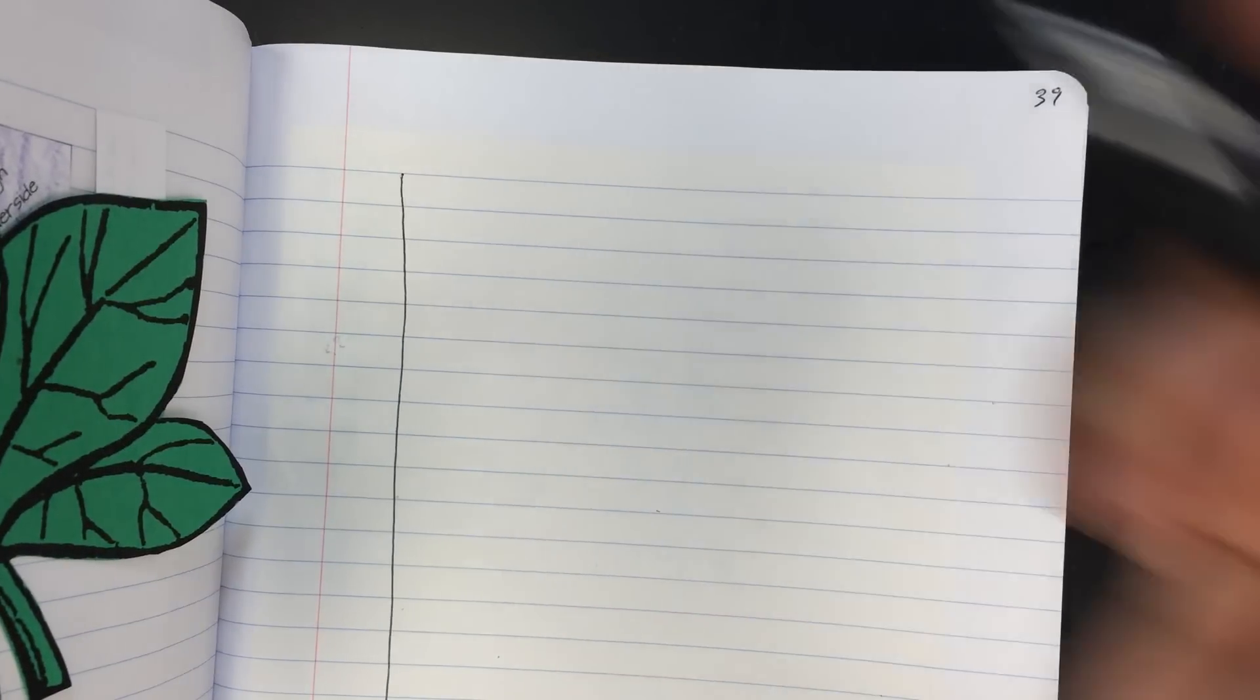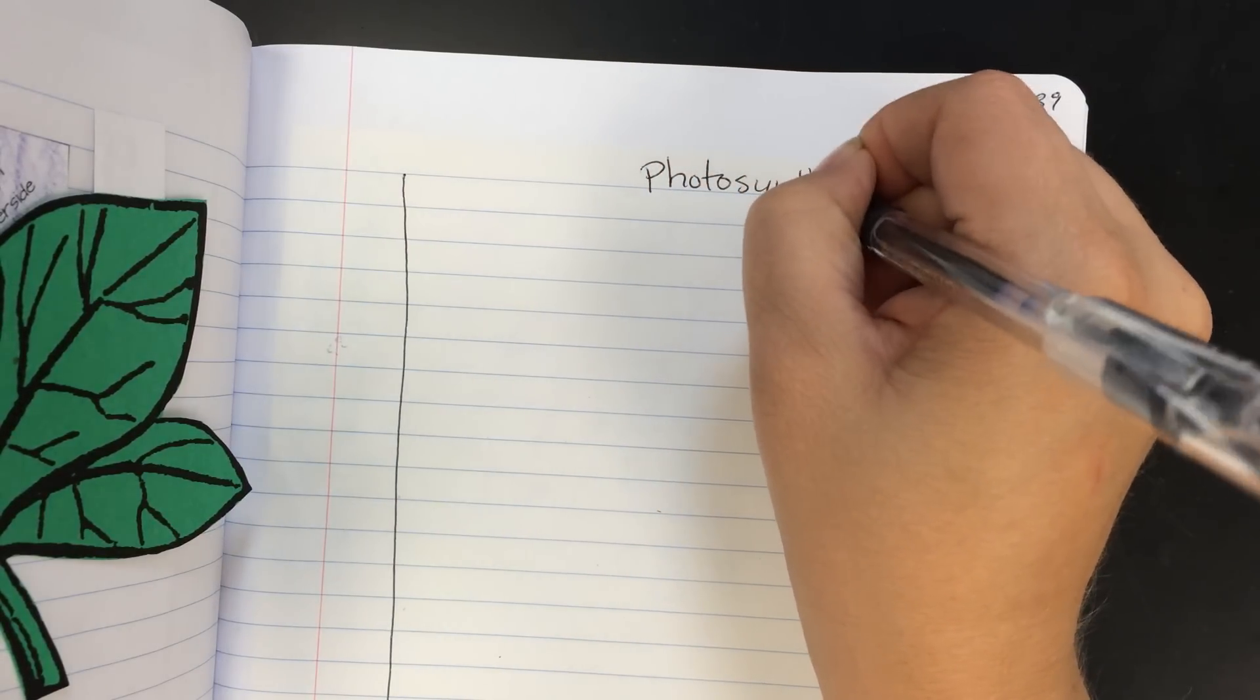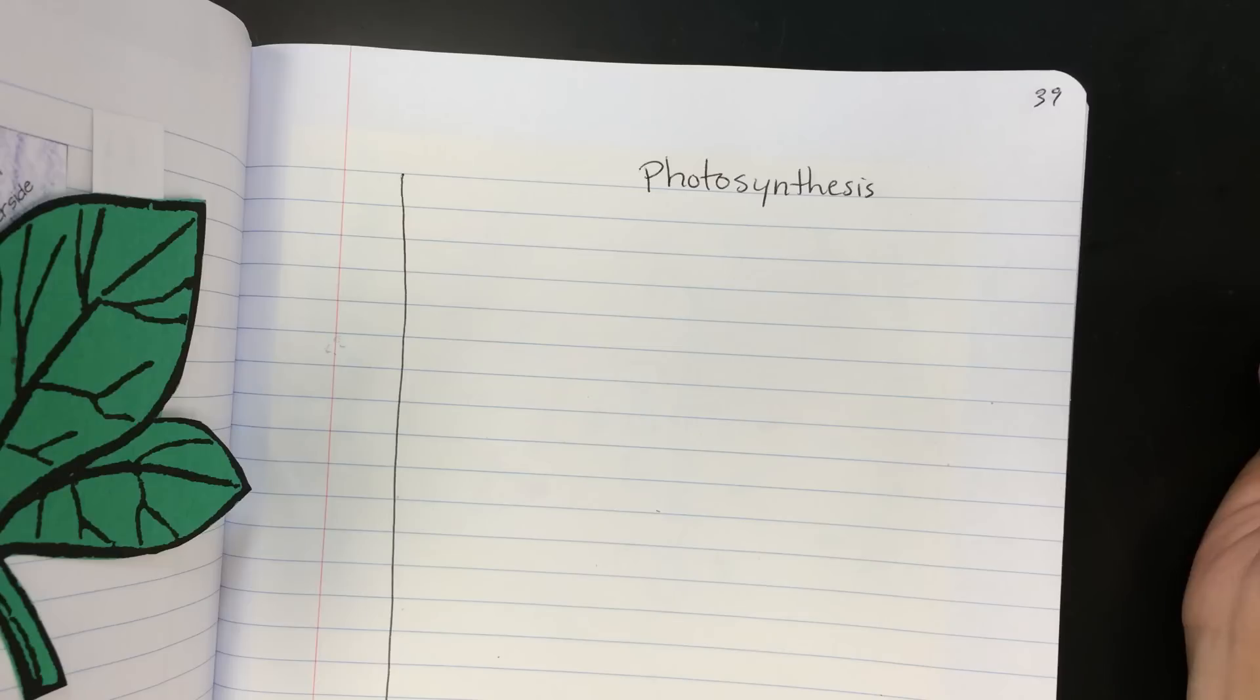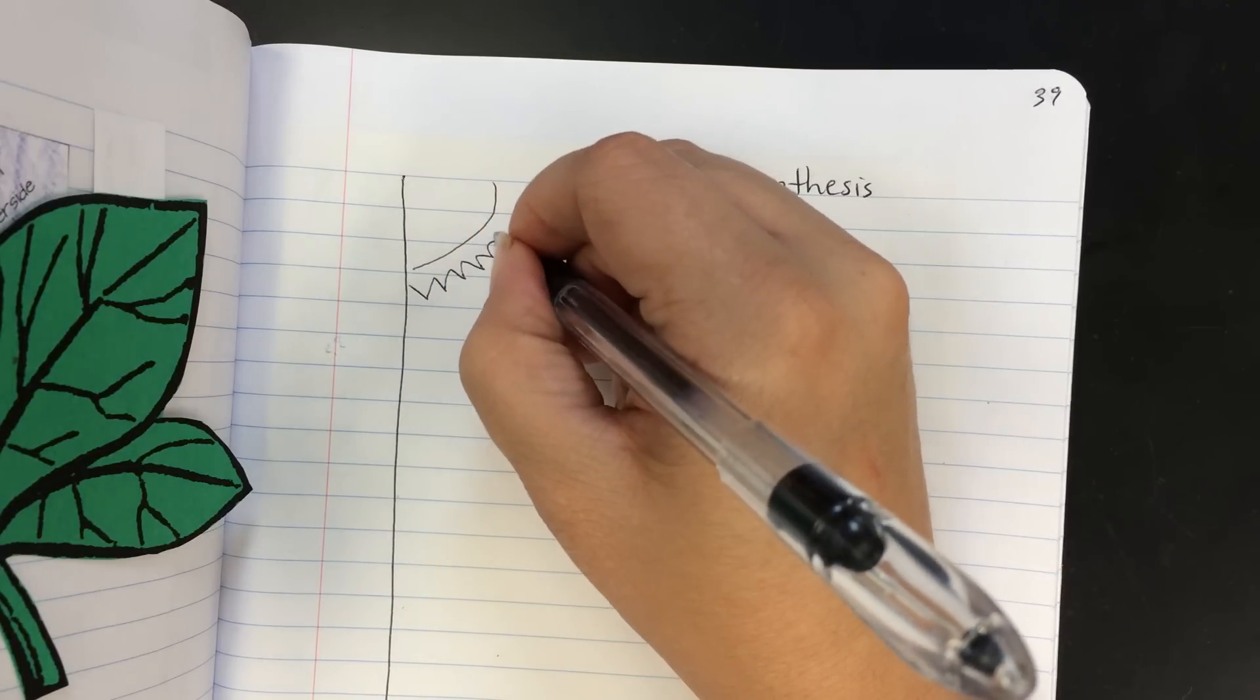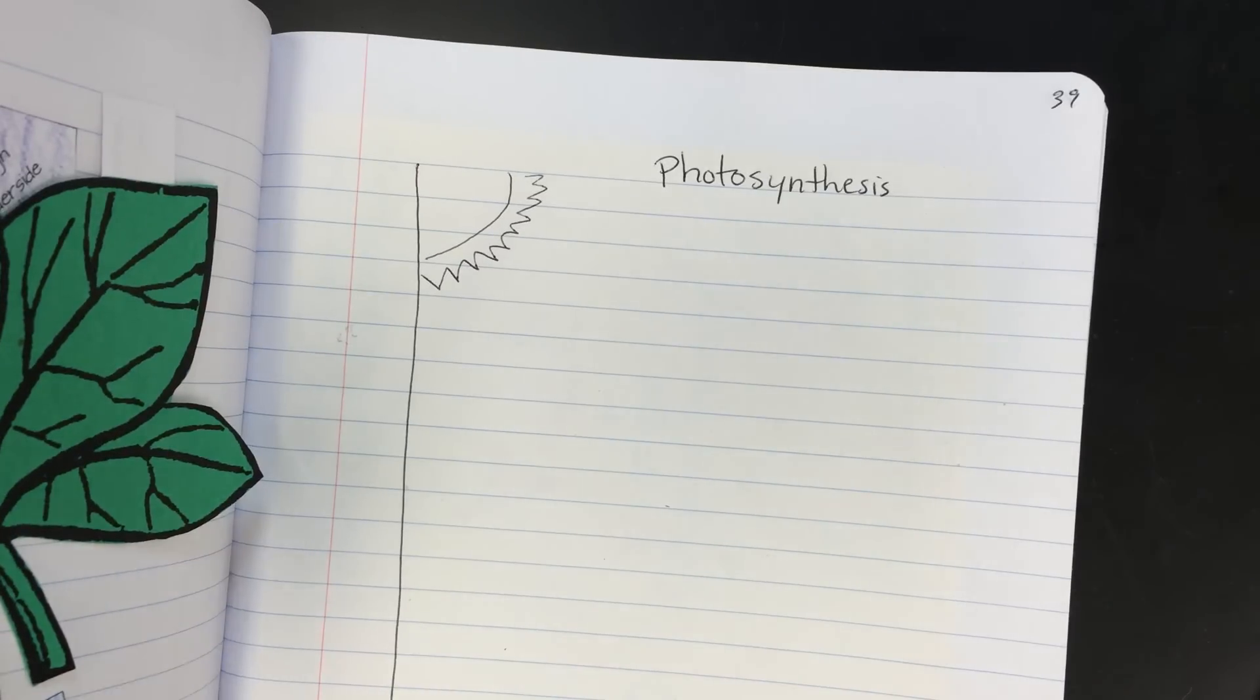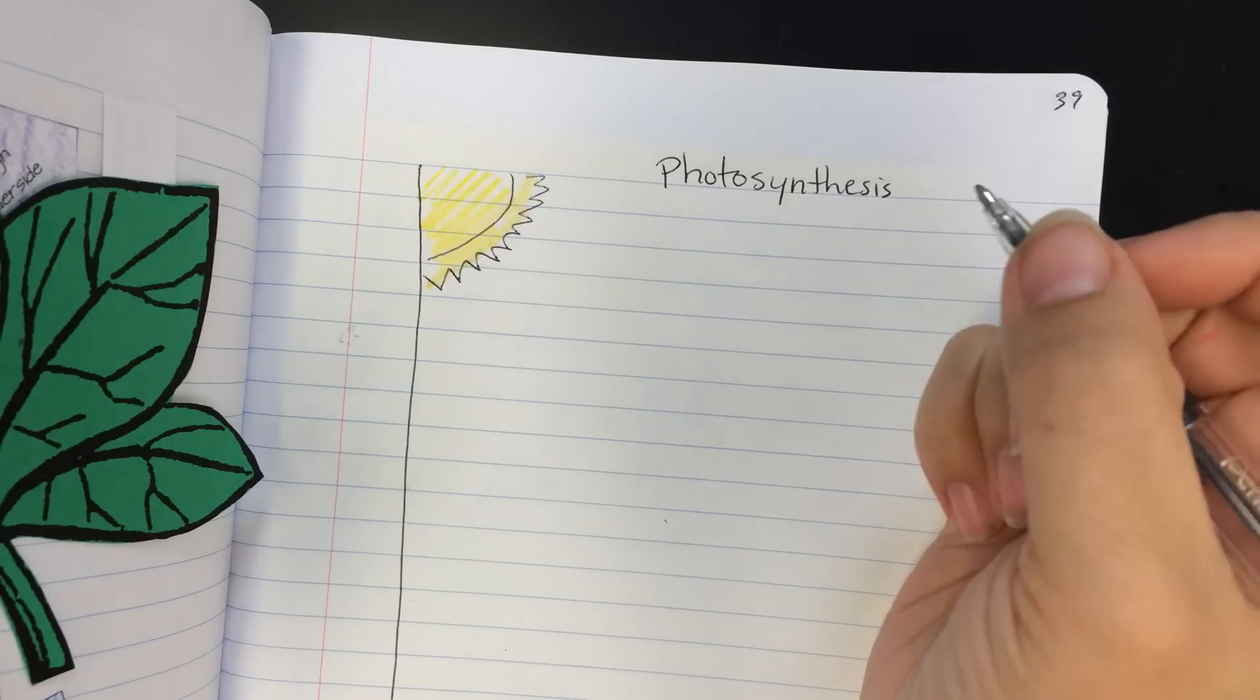So the title of our notes today is going to be Photosynthesis. So where does photosynthesis all begin? It begins with the sun. So let's draw a fun little sunshine up in the corner. And if you have any markers or colors and you want to make your notes a little more pretty, you certainly can because color always makes it more fun.